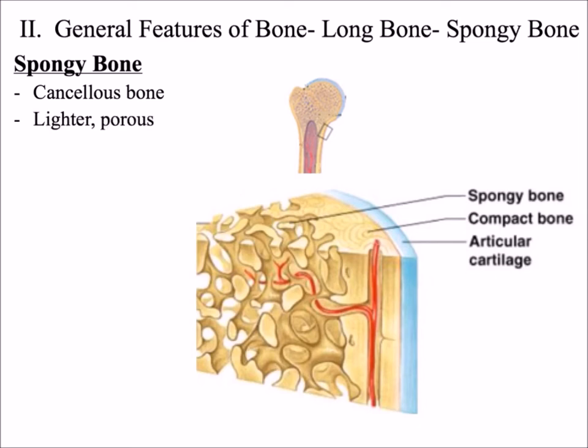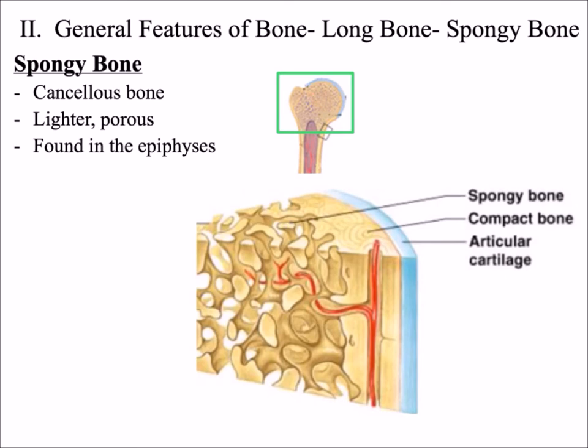Spongy bone is very light and very porous — in other words, it has a lot of holes. It's found in the epiphyses of long bones. Here's an epiphysis, and you can see that there's spongy bone located there.